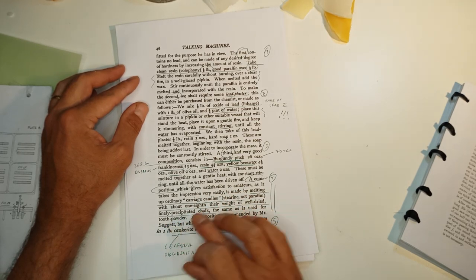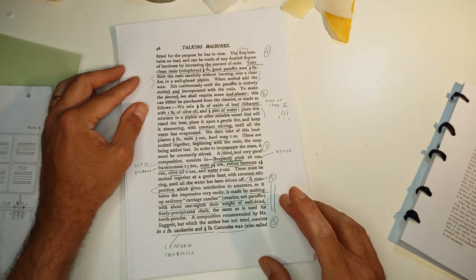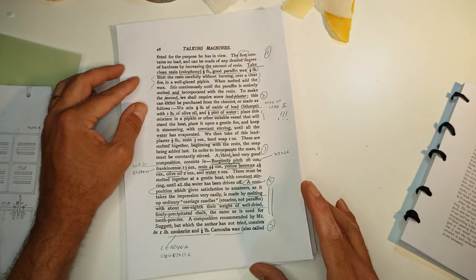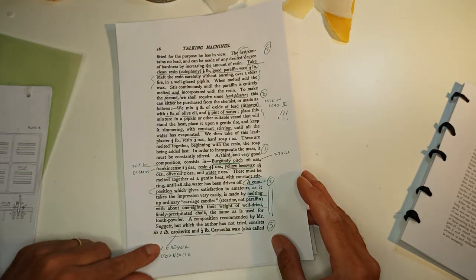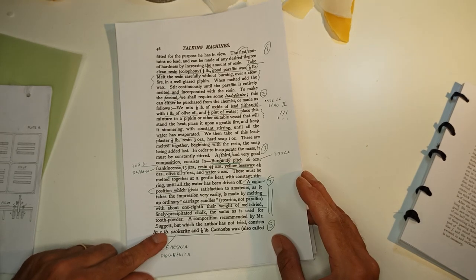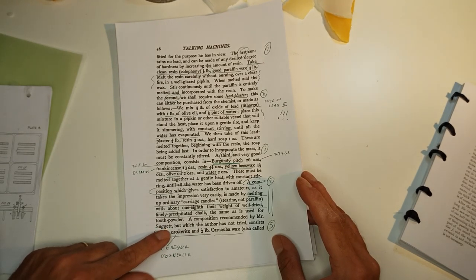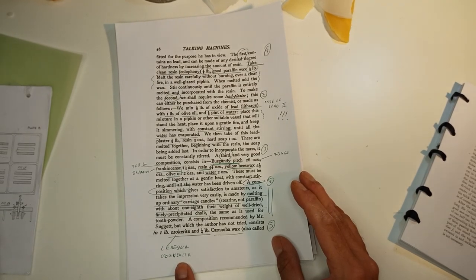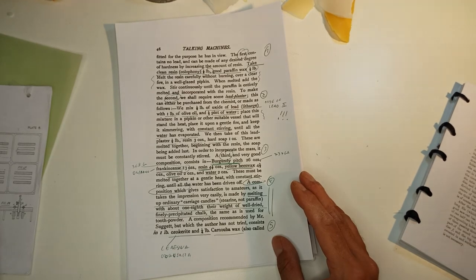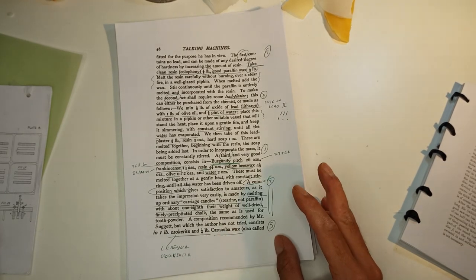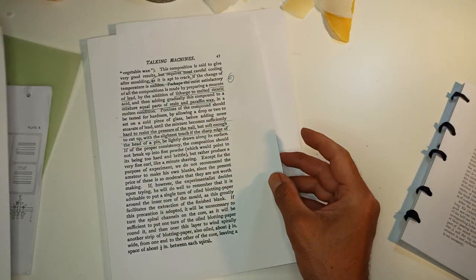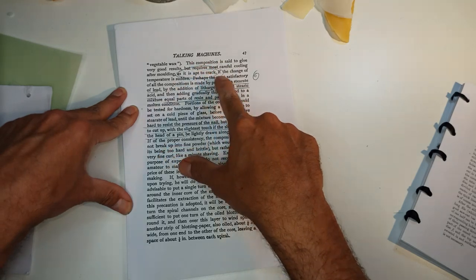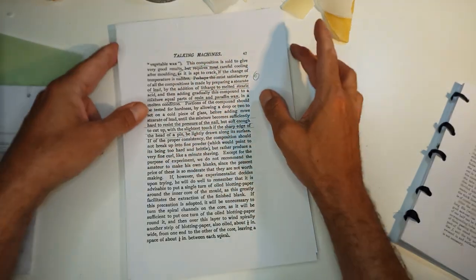There's a fourth recipe: melting up carriage candles, not paraffin, with about one-eighth of their weight of well-dried, finely precipitated chalk, the same as used for tooth powder. This was interesting, maybe I will also try this one. Then there's a composition recommended by Mr. Suget that he says he has not tried. That is also ceresin, this also can be found, it's not too difficult, it's a sort of fossilized wax or mineral wax, and carnauba wax, this is very easy. But this he said is very apt to crack, so I'm not very fan of this one.